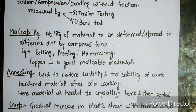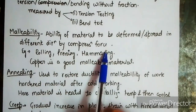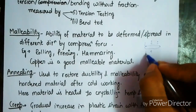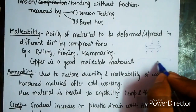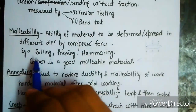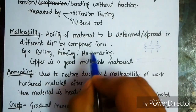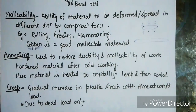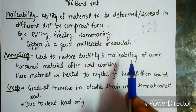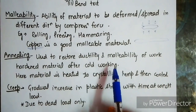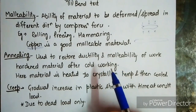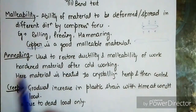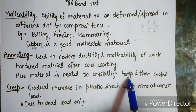Malleability is the ability of a material to be deformed or spread in different directions by a compressive force, such as in rolling, pressing, and hammering. Copper is a good malleable material. Annealing is used to restore ductility and malleability to work-hardened material after cold working. In annealing, the material is heated to crystallization temperature and then cooled at room temperature.